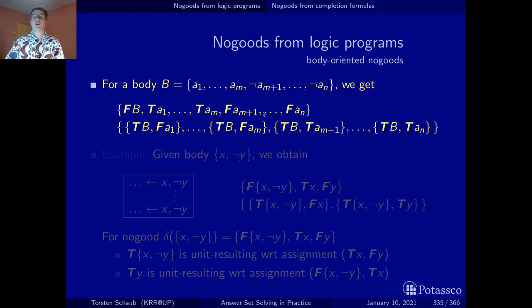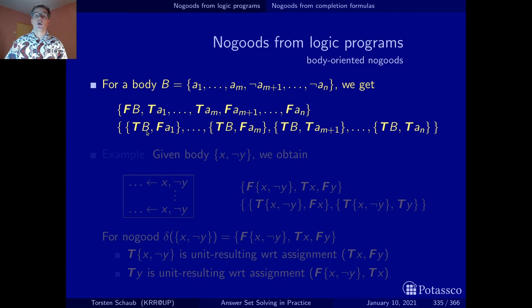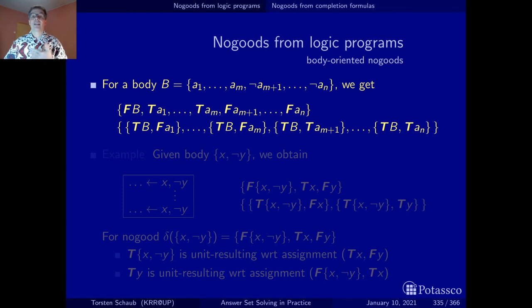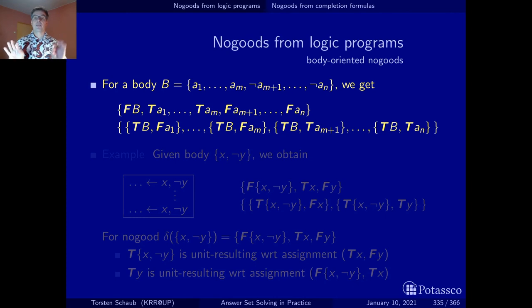The second type of no-good says that it can't be the case that the body is true but a positive body literal has been found to be false, or it can't be the case that the body is true and the negative body literal has been found to be false — that is, the underlying atom has been found to be true. These are the no-goods we get from the equivalence linking body literals with the auxiliary atom representing bodies.